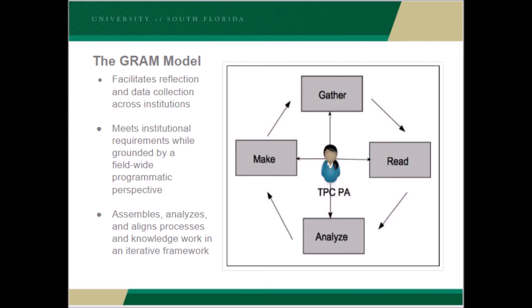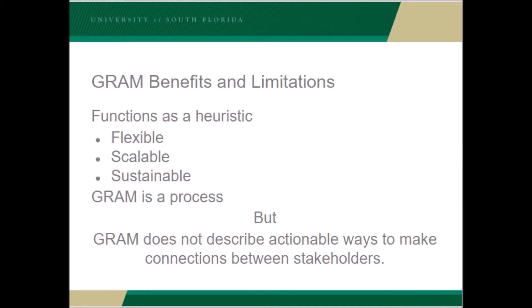GRAM has a lot of benefits. It functions as a heuristic, a way to think through how to handle your program administration in a deeply sustainable way. It's flexible and scalable — it allows you to scale your programmatic work for very small programs like even just a single service course, or a really big program with a lot of courses or students. It's definitely sustainable because it is recursive. But what GRAM doesn't do is describe actual ways to make connections between stakeholders.